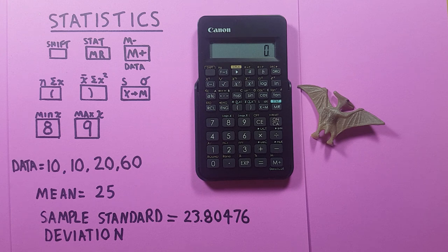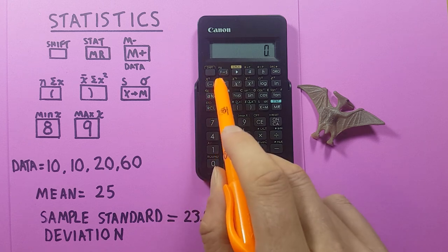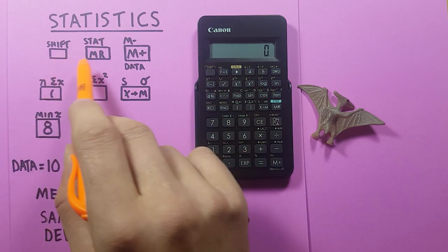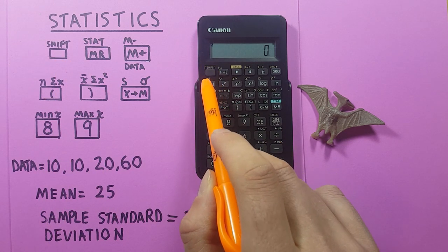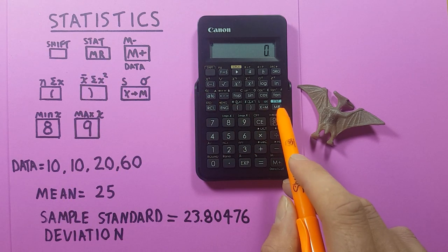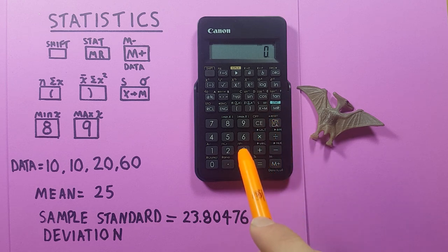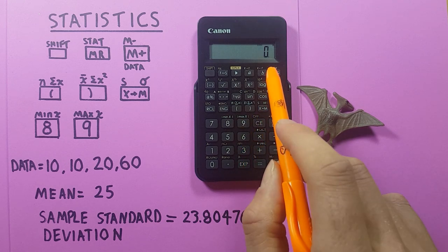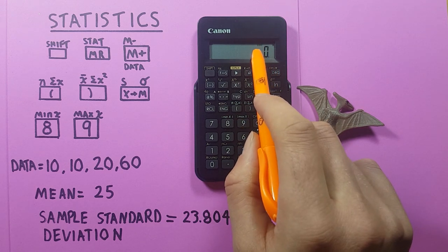Alright, so getting started we have to convert our calculator from normal mode into stats mode. To do this we press the shift key, looks like this and is located here, and then the STATMR key which is down here and turns our calculator to statistics mode. You should be able to see the word STAT at the top of the screen there.